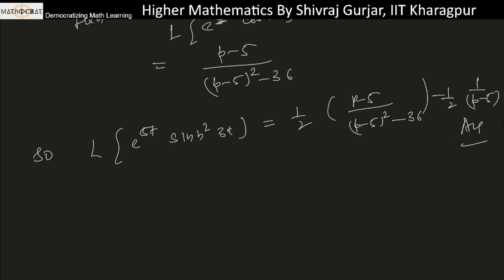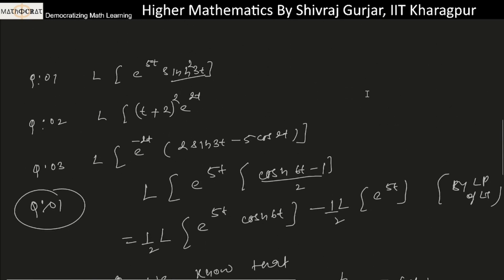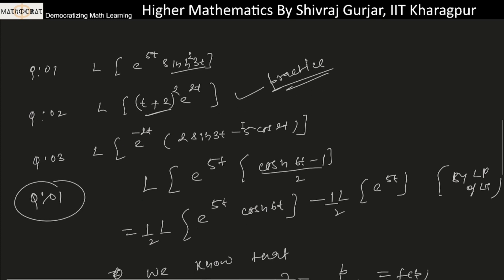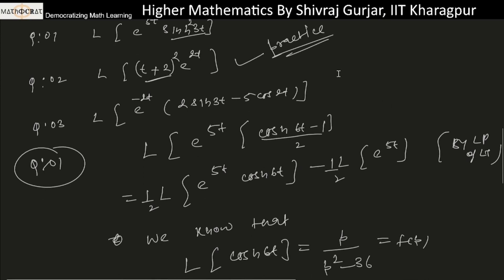Second question: Laplace of (t plus 2) whole squared. We apply the shifting theorem. This is practice for you. Let me know the answer in the comment section. Let's try the third question, which is similar. We can use the linear property to distribute.